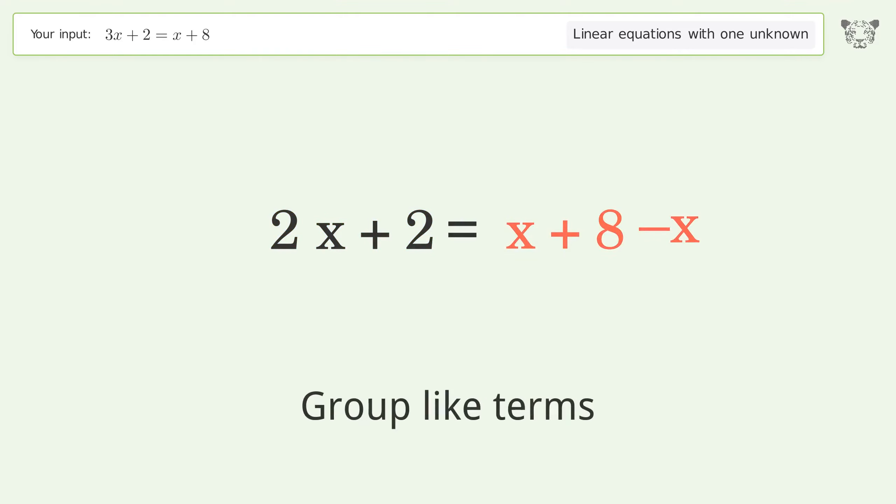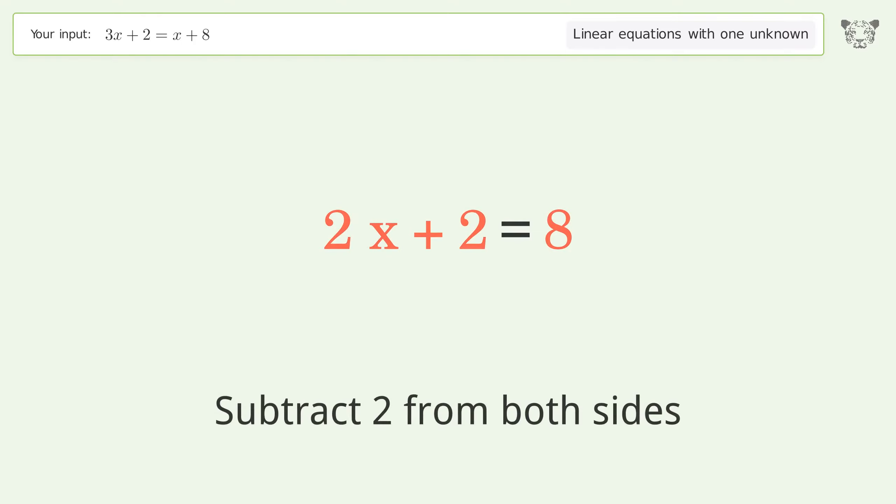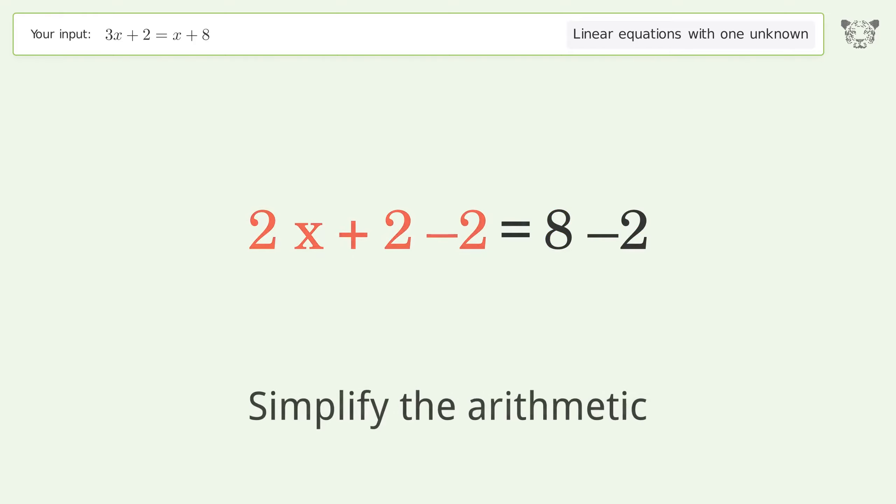Group like terms. Simplify the arithmetic. Group all constants on the right side of the equation. Subtract 2 from both sides. Simplify the arithmetic.